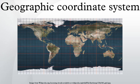The zero-zero point is located in the Gulf of Guinea about 625 kilometers south of Tema, Ghana. In 1884 the United States hosted the International Meridian Conference and 25 nations attended. Twenty-two of them agreed to adopt the location of Greenwich as the zero-reference line.